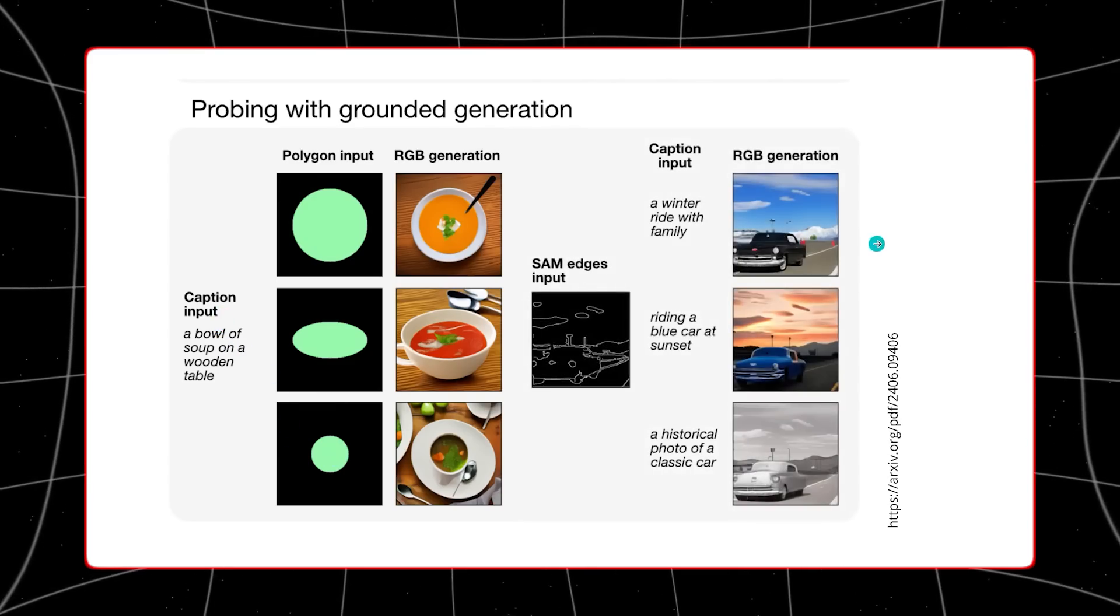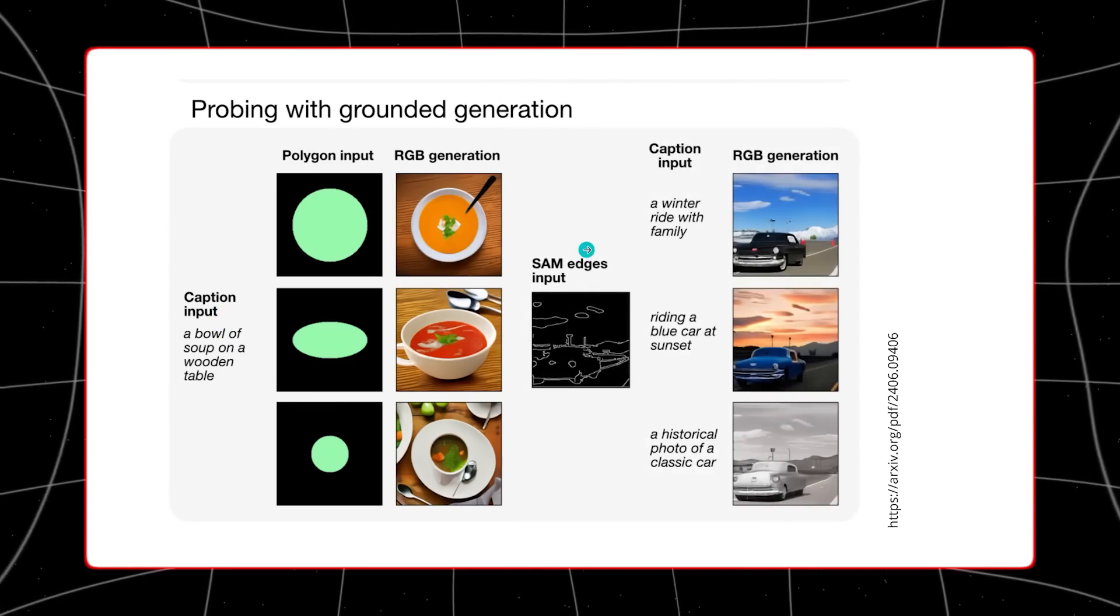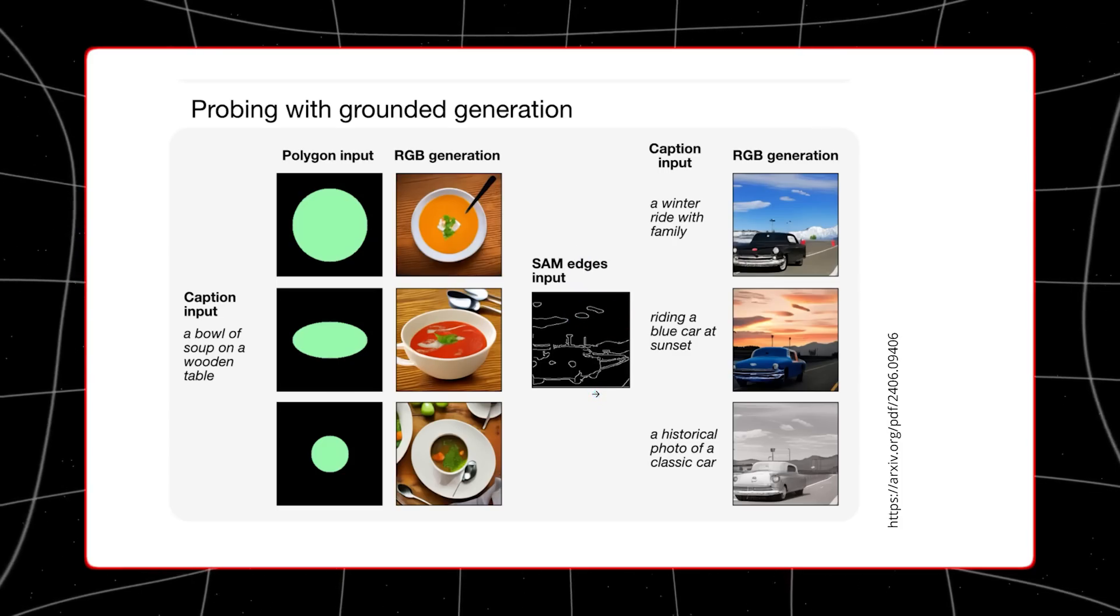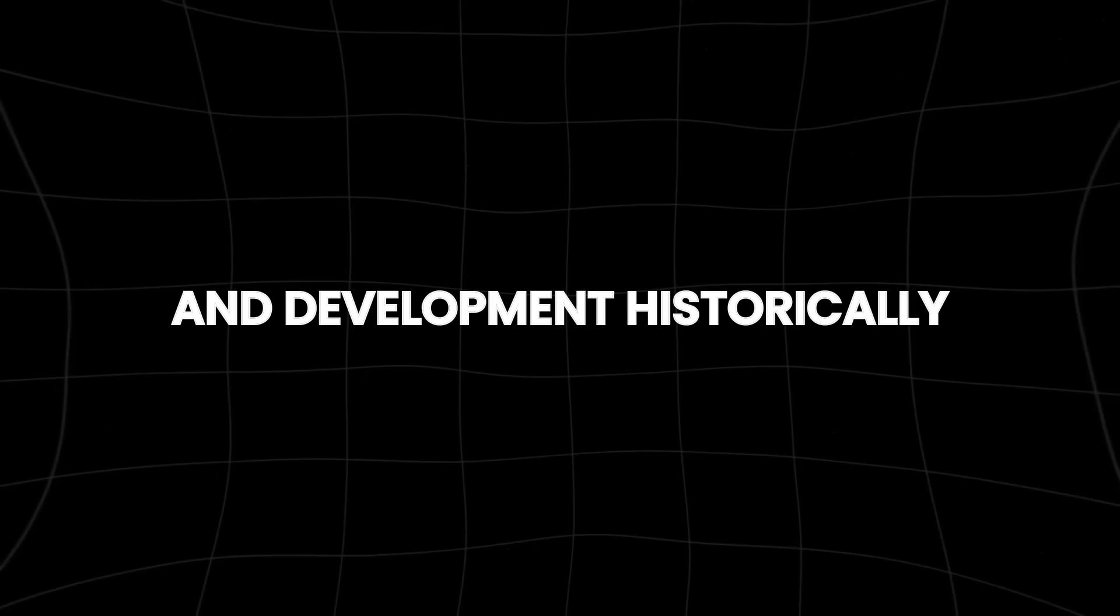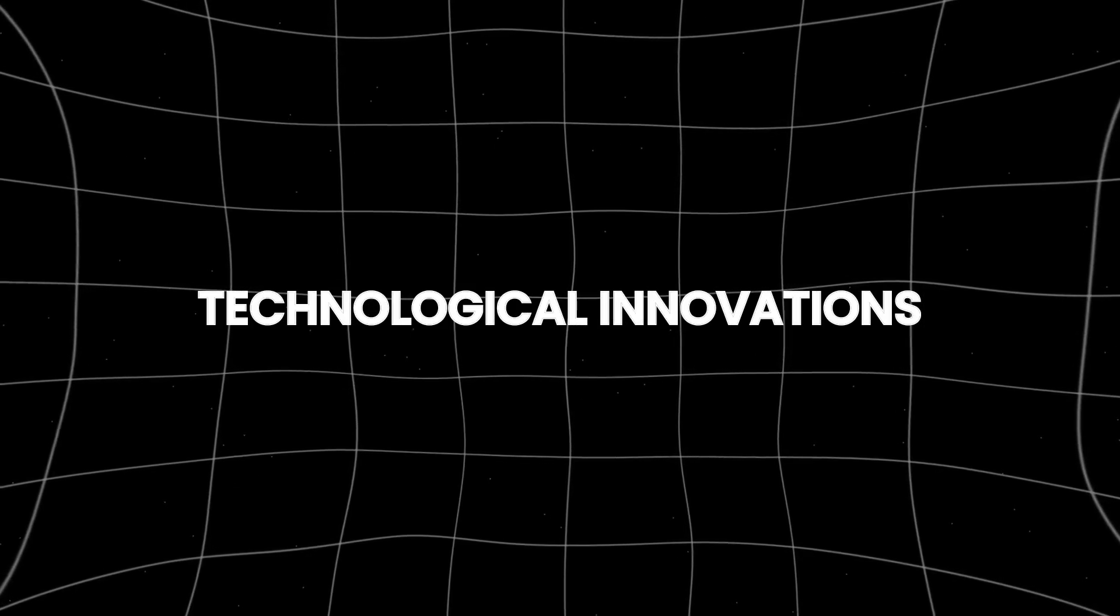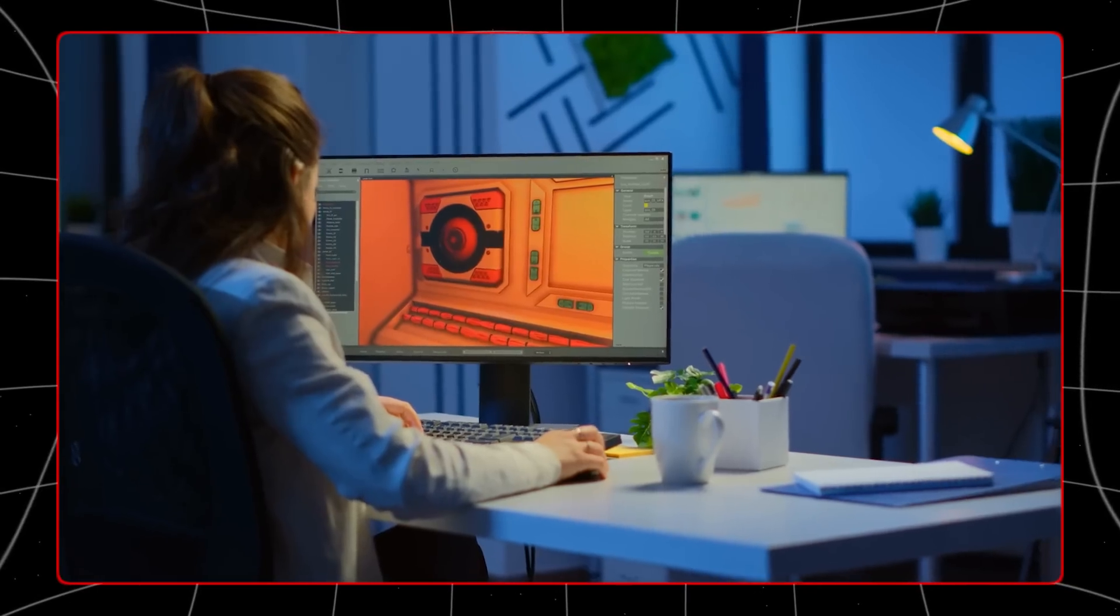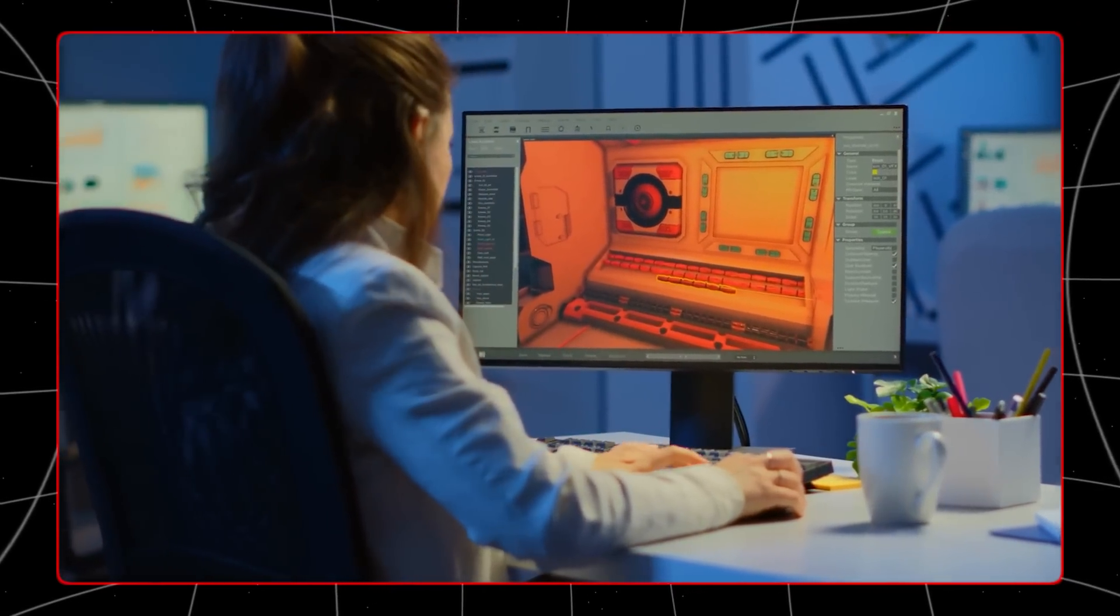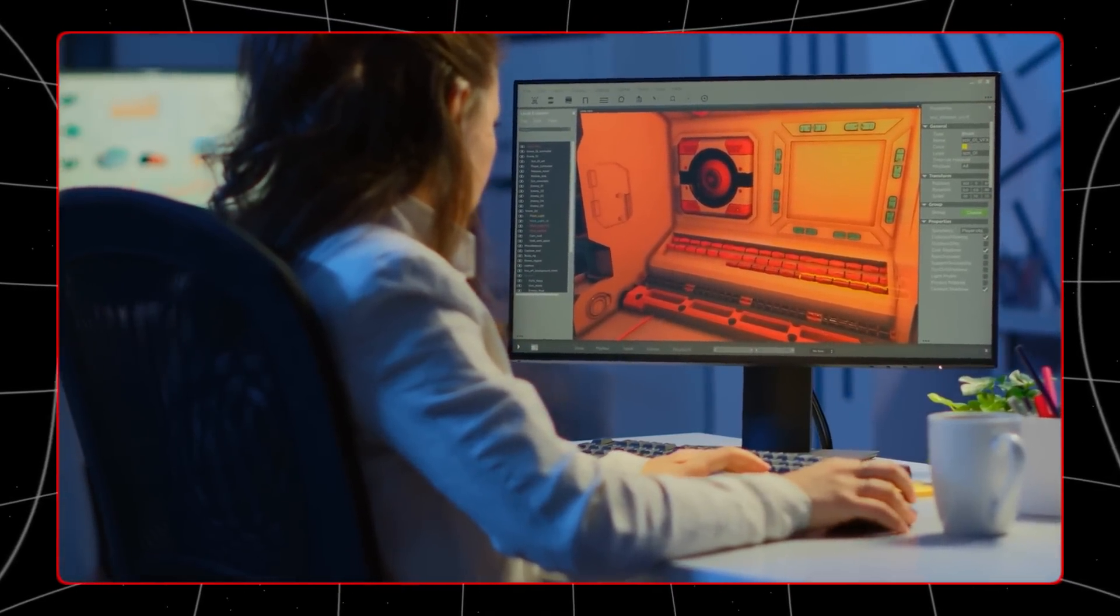This launch is noteworthy not only for its technological implications, but also because it represents a big shift in Apple's approach to research and development. Historically, Apple has been known for its secrecy and tight control over its technological innovations. However, by making the 4M model publicly accessible on Hugging Face, a popular open-source AI platform, Apple is signaling a new openness and willingness to engage with the broader AI and developer communities.